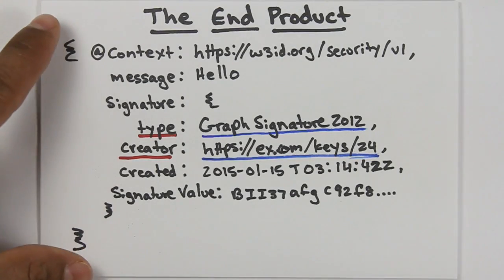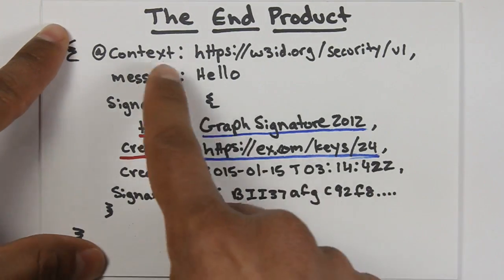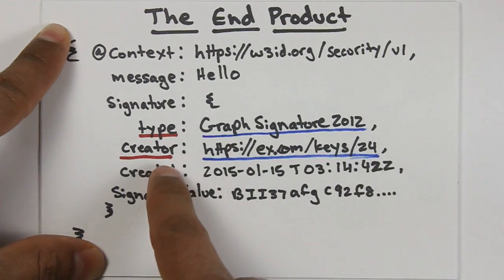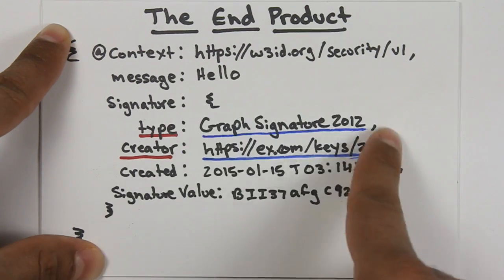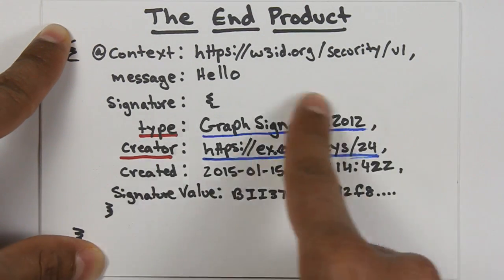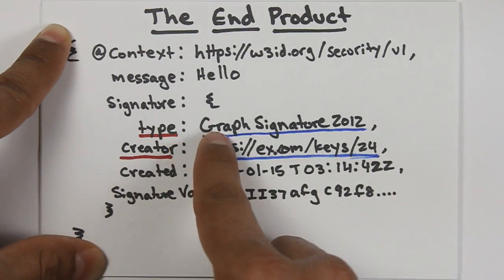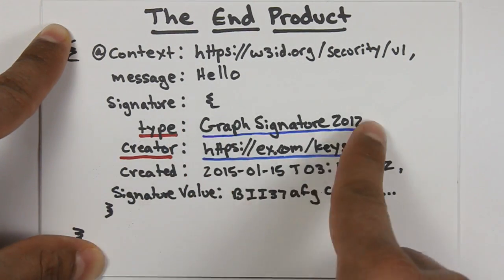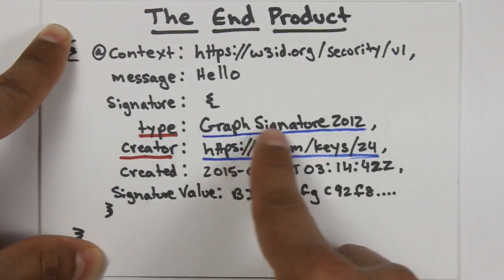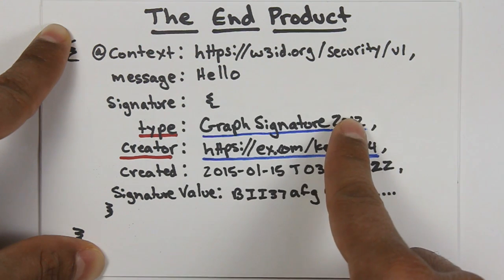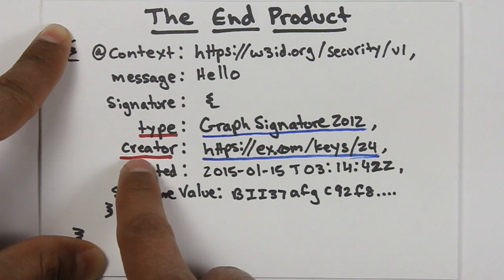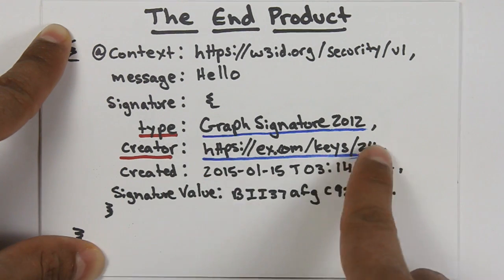Let's take a look at what the end product looks like again. We've got the JSON-LD information here, and the key is in these two pieces of information. The key to understanding all of this is in these two pieces of information. This is the algorithm that should be used. This is pluggable. You could use a variety of different algorithms for linked data signatures. It doesn't have to be this particular one.